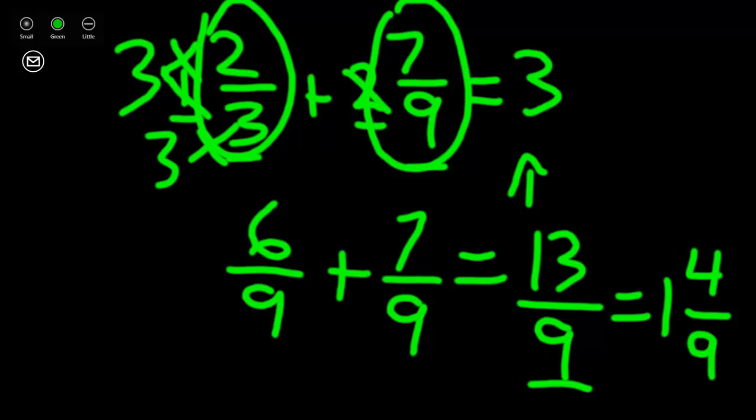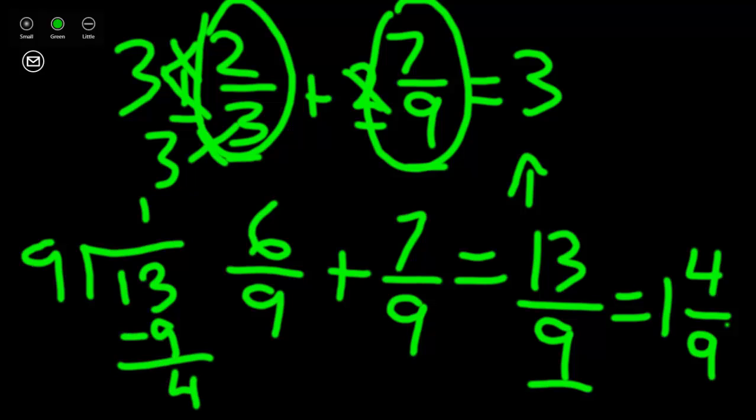To show the work we could say 9 is our divisor, 13 is our dividend, 9 goes into 13 one time, subtract and find your remainder. 13 minus 9 is 4. So we have 4 ninths left over and we have our mixed number of 1 and 4 ninths.